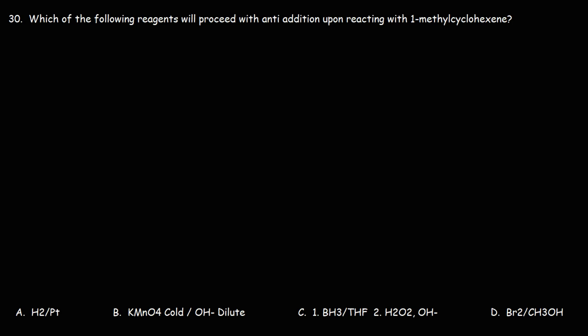Number 30. Which of the following reagents will proceed with anti-addition upon reacting with 1-methylcyclohexene? So let's draw the reactant. So this is 1-methylcyclohexene, and let's begin by reacting it with hydrogen gas using a platinum catalyst. Now just to color code this, I'm going to make this red. Now keep in mind, there is a hydrogen atom here.